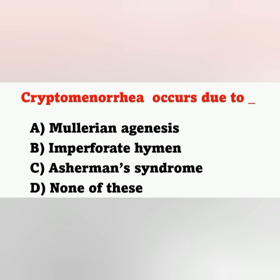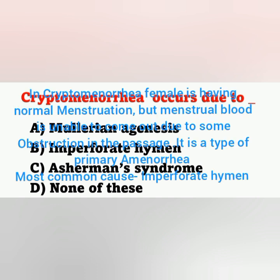First question: Cryptomenorrhea occurs due to which of the following? Option A: Mullerian Agenesis. Option B: Imperforate Hymen. Option C: Asherman Syndrome. Option D: None of these. The question is, what is the cause of Cryptomenorrhea?